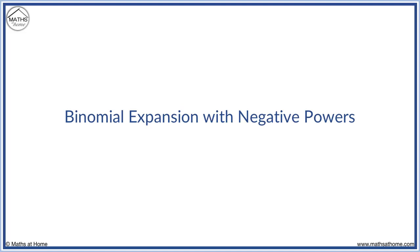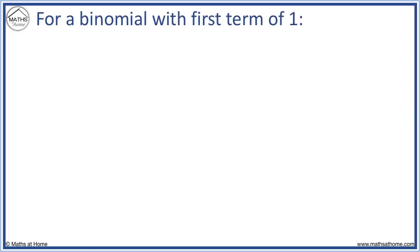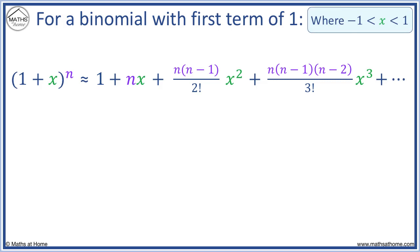In this lesson, we learn how to do a binomial expansion with a negative power. For a binomial that has a first term of 1 — which is when we have two terms inside a bracket with the first being a 1 — we can write this as a Taylor series. The power of x increases by 1 each time, and the coefficients follow a pattern in the numerator while the denominator increases from 2 factorial to 3 factorial, and so on. This series is only valid for x values between minus 1 and 1.